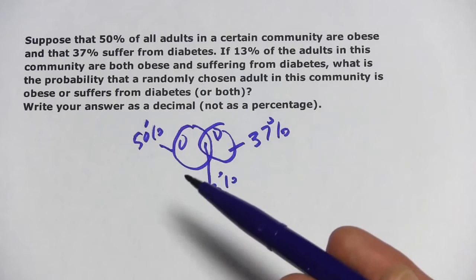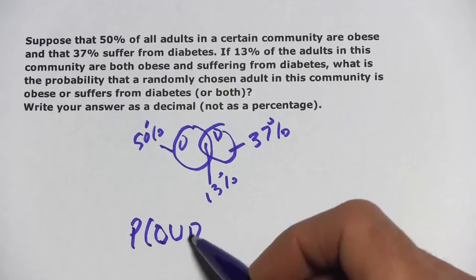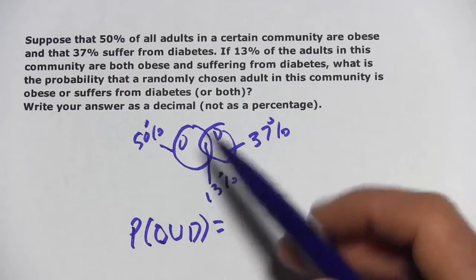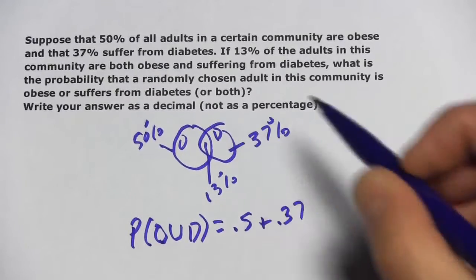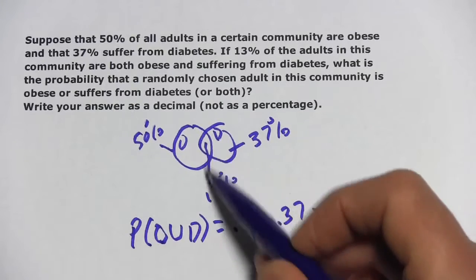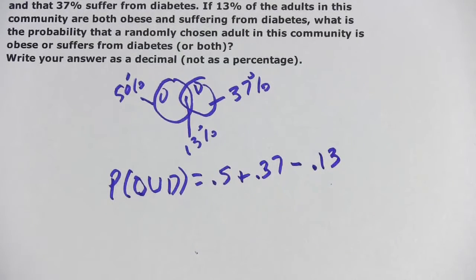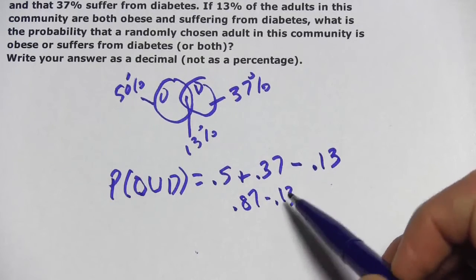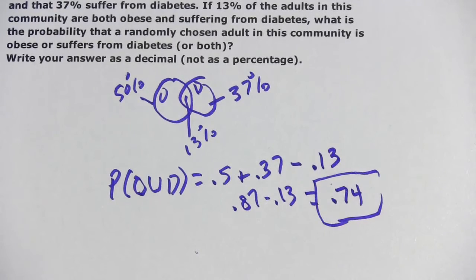We're going to use the addition formula for probability, which states that the union of the two — obese union diabetes — is the probability of obese, which is 0.5, plus the probability of diabetes, which is 0.37, minus the probability of the intersection, which is 0.13. This comes down to simple addition and subtraction: 0.87 minus 0.13 equals 0.74. That's a little bit of work with the probability of intersections and unions.